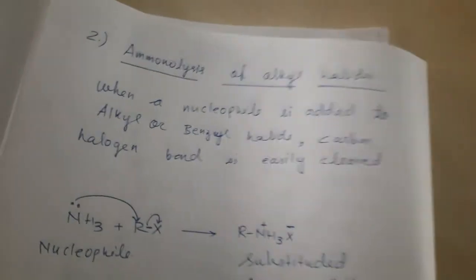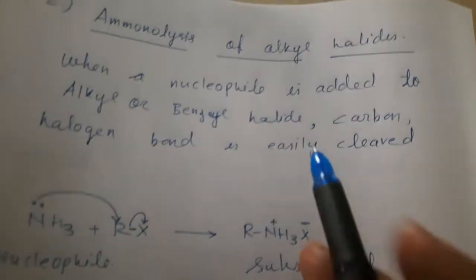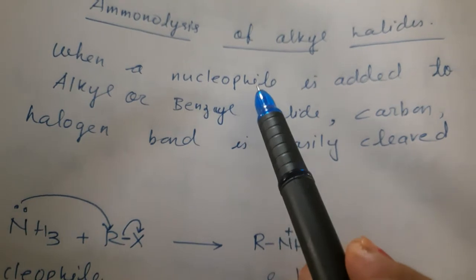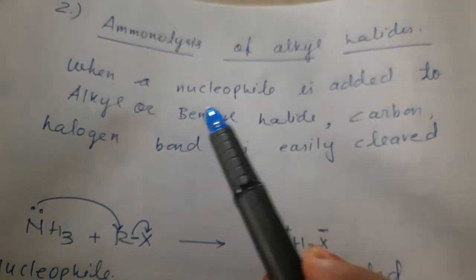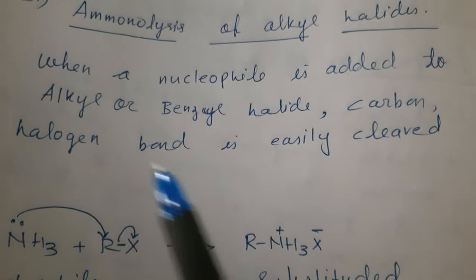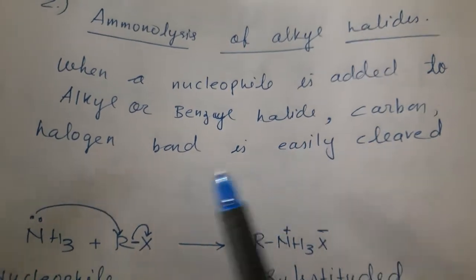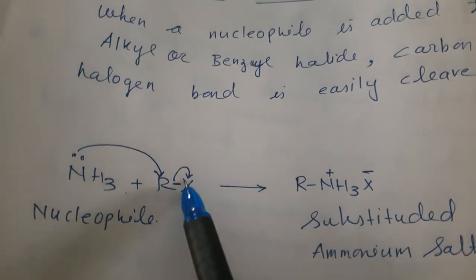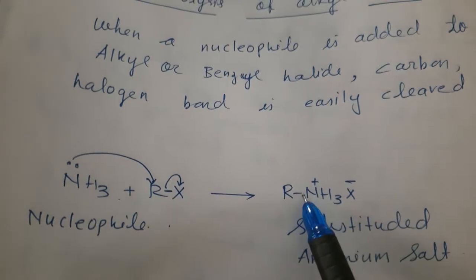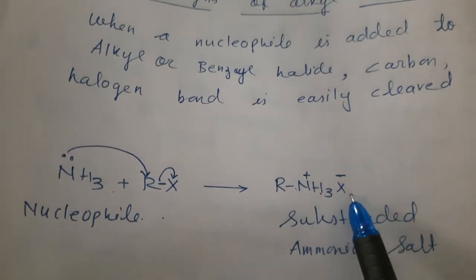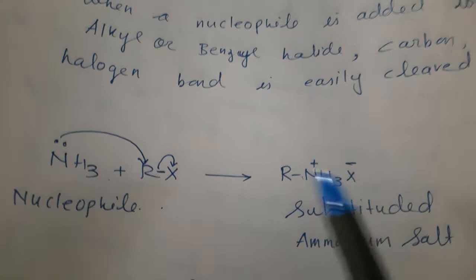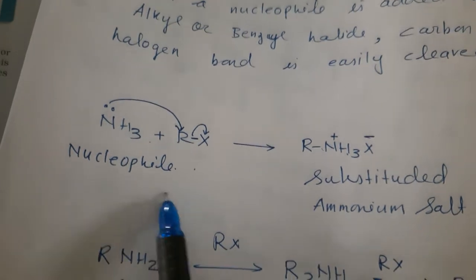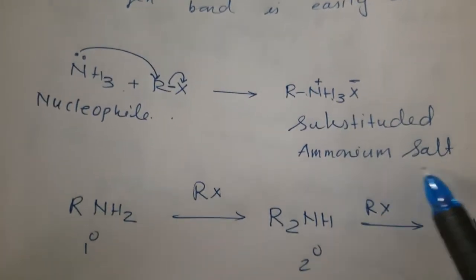Ammonolysis of Alkyl. When a nucleophile is added, nucleophile meaning negative charged ion or atom. So, when a nucleophile is added to Alkyl or Benzyl halide, Carbon-Halogen bond is easily cleaved. You see, NH3 plus Rx. So, this bond easily cleaved. So, it will be R-NH3+ and X-. This is known as substituted ammonium salt.